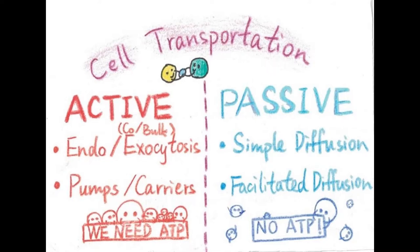Passive transport is the movement of molecules from high to low concentration in order to maintain equilibrium in the cells. This doesn't require cellular energy. There are three types of passive transport: simple diffusion, osmosis, and facilitated diffusion.